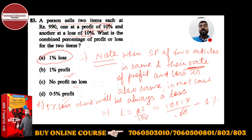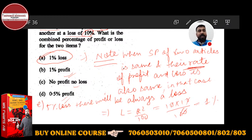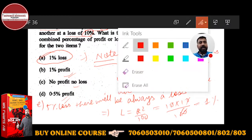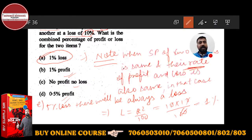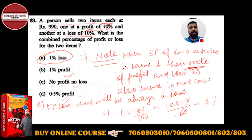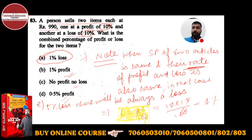If there were another option with 5% loss, then you would need to calculate the value since two options show a loss. You can find that value using the formula: L = r²/100. This formula is very important — do remember this. This note is also very important, and this formula is also important.